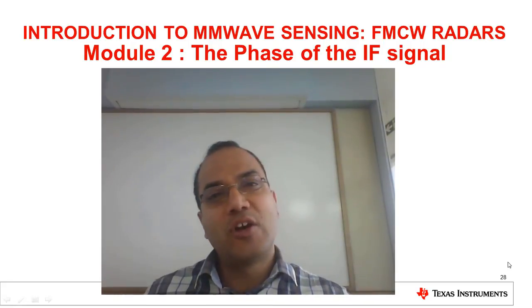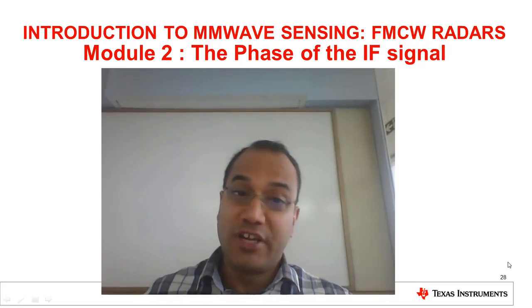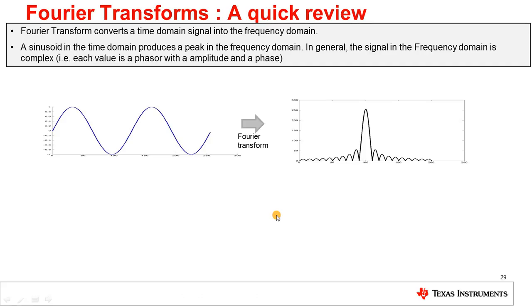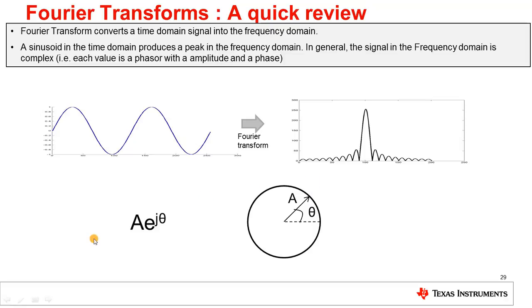We are going to start this module with a quick overview of some relevant concepts in Fourier transforms. A sinusoid in the time domain produces a peak in the frequency domain, with the location of the peak corresponding to the frequency of the sinusoid. It is important to understand that the signal in the frequency domain is a complex number with an amplitude and a phase. So while this plot here represents the amplitude of the Fourier transform, each of the values is in fact a complex number with an amplitude and a phase. A complex number can be mathematically represented in the form A·e^(jθ), where A is the amplitude and θ is the phase.